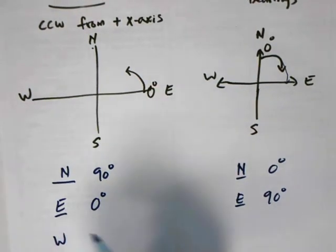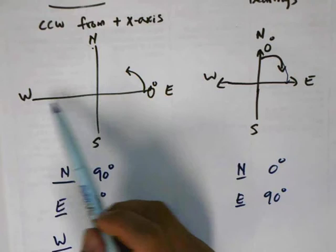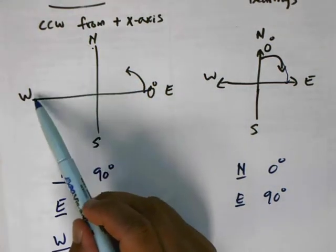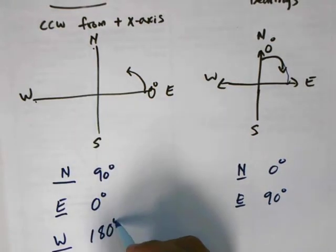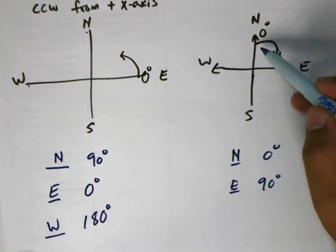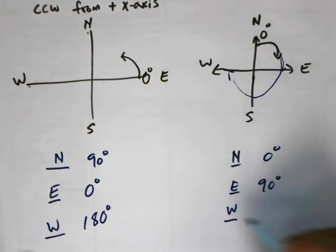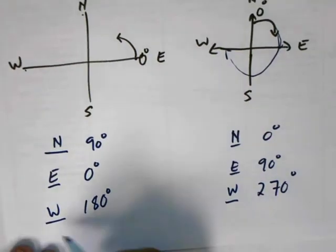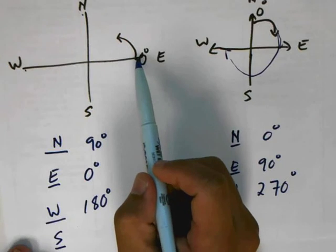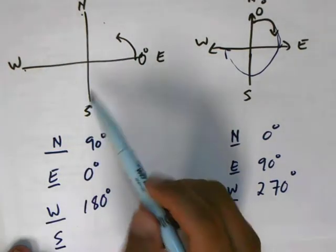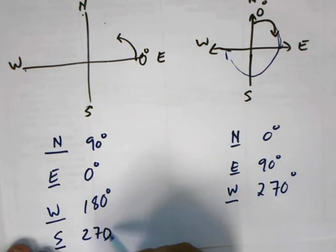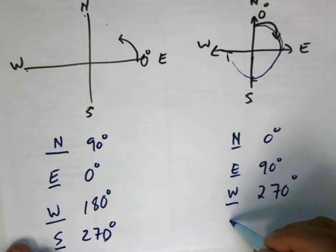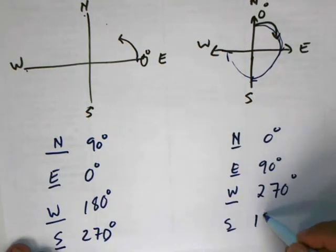A couple more: west. For standard form you're starting from zero and rotating counterclockwise, so that's 180 degrees. But for compass bearings you're starting at north and going around this way, so due west would actually be 270 degrees. Finally, for south in standard form you're going counterclockwise, so that's 270 degrees. But for compass bearings you're starting at north and going down, so that is 180 degrees.